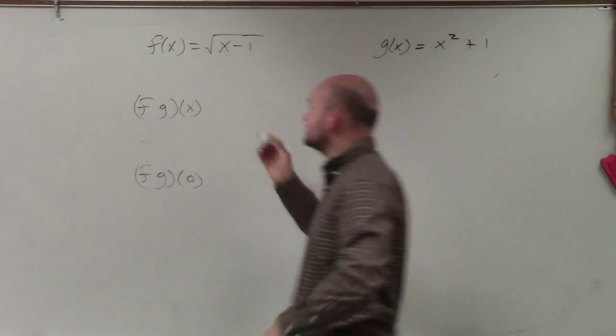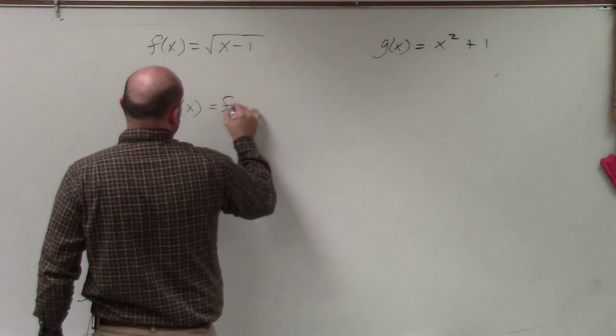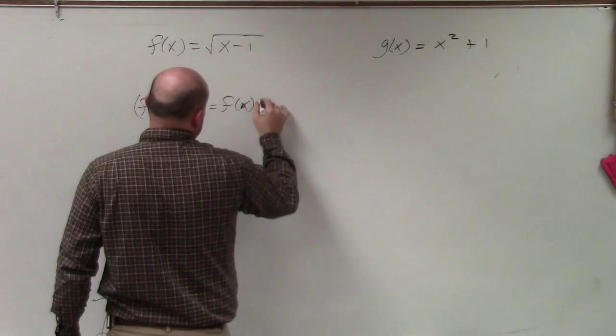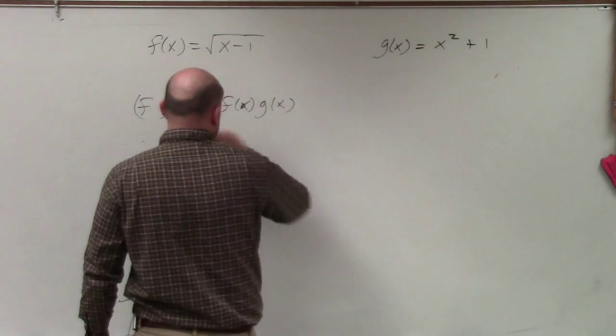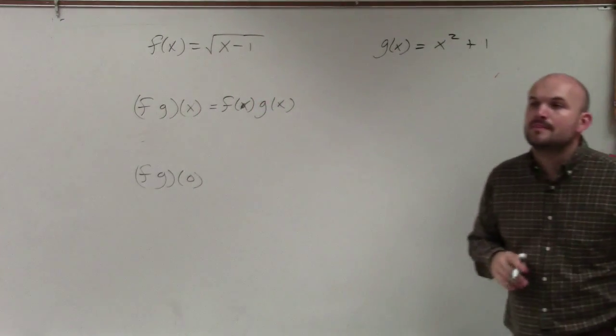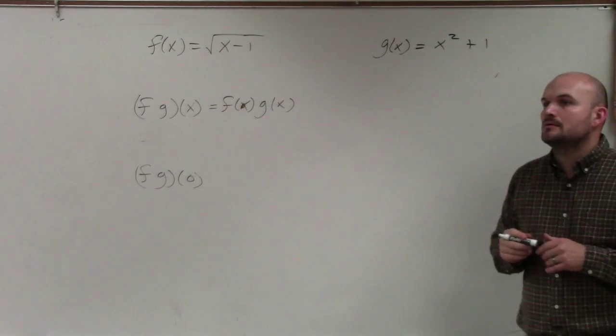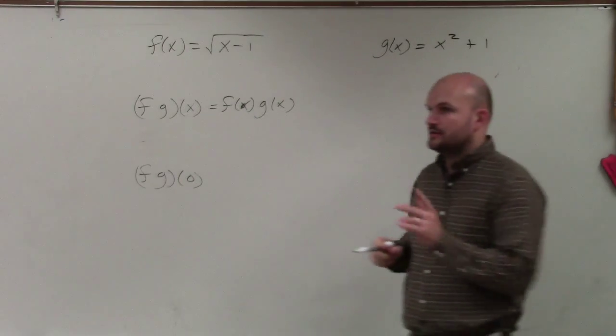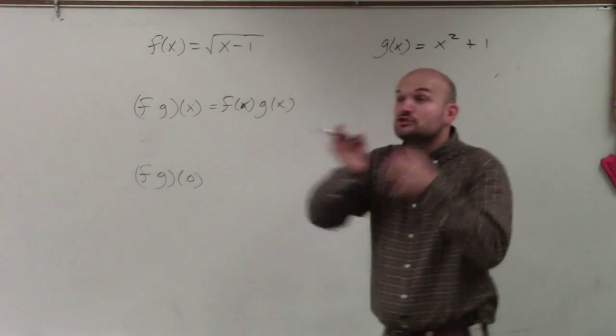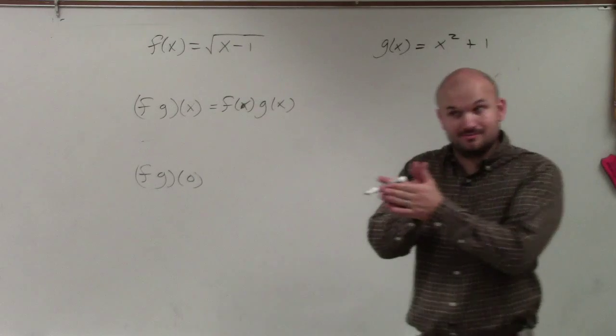Now we have f of g of x, which is basically just telling us to multiply f of x times g of x. [Student asks question] No, we're going to get to that next, or after that. So when they're just next to each other, that's multiplication.